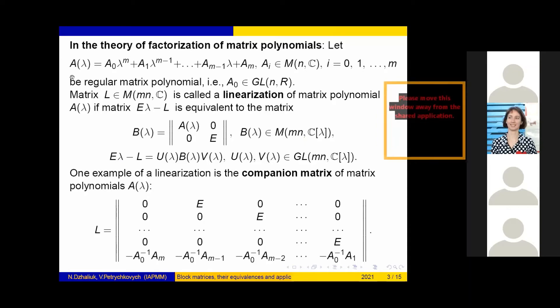Let A(λ) be a regular matrix polynomial. Matrix L is called a linearization of matrix polynomial A(λ) if matrix Eλ - L is equivalent to the matrix B(λ). One example of a linearization is the companion matrix of matrix polynomials A(λ). This matrix is block and has this form.